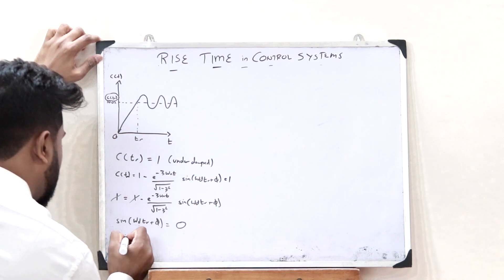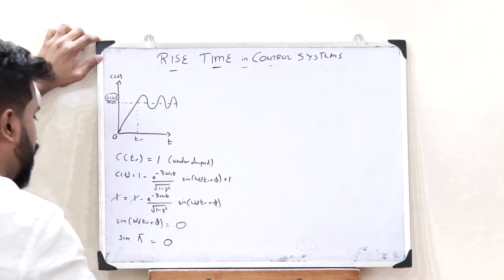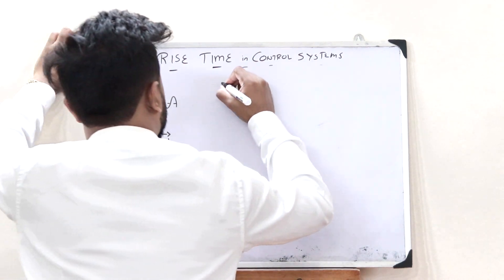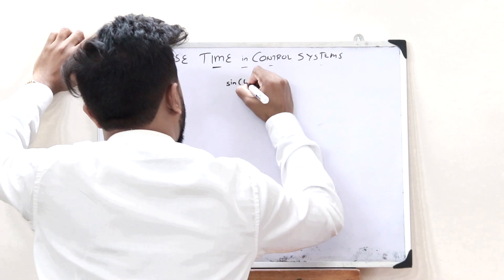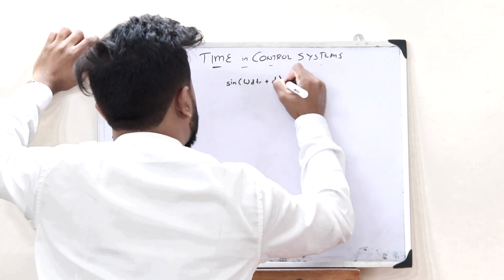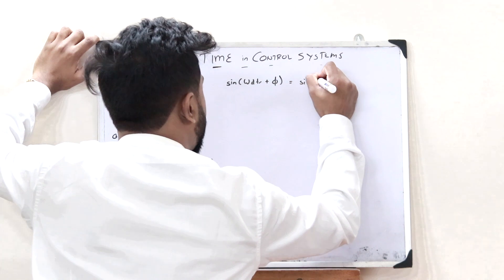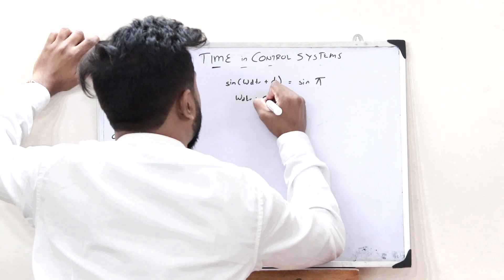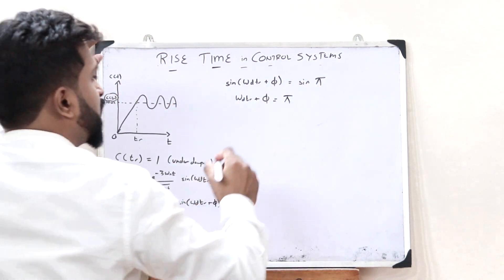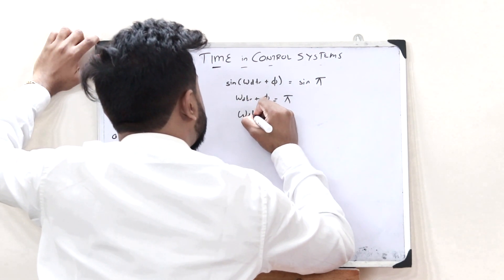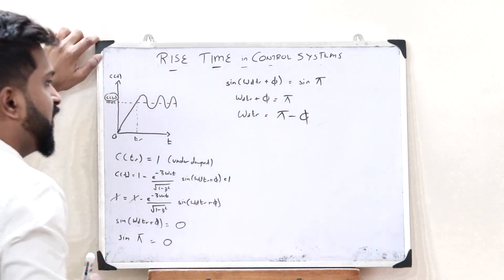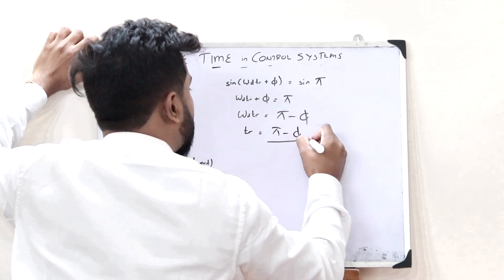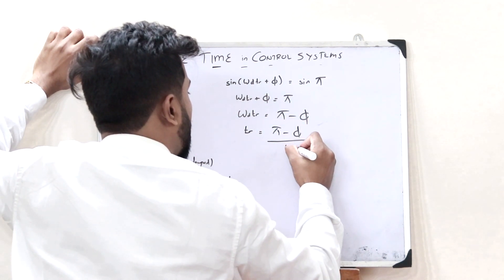We know that sin(π) = 0. Therefore, sin(ω_D T_R + φ) = sin(π), which means ω_D T_R + φ = π. Therefore, ω_D T_R = π − φ, and so the rise time T_R = (π − φ) / ω_D.